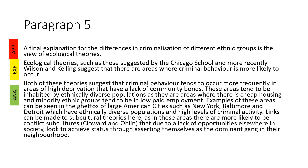Paragraph five — the final explanation — looks at ecological theories. Some of these are incredibly dated, nearly 100 years old, but ecological theories such as those from the Chicago School, and more recently Wilson and Kelling's broken windows theory, suggest there are areas where criminal behaviour is more likely to occur. Both suggest criminal behaviour occurs more frequently in areas of high deprivation with a lack of community bonds, which tend to be inhabited by ethnically diverse populations due to cheap housing and low-paid employment. Examples include the ghettos of large American cities such as New York, Baltimore and Detroit. Links can be made to subcultural theories, as in these areas conflict subcultures may seek status through asserting dominance as the local gang.